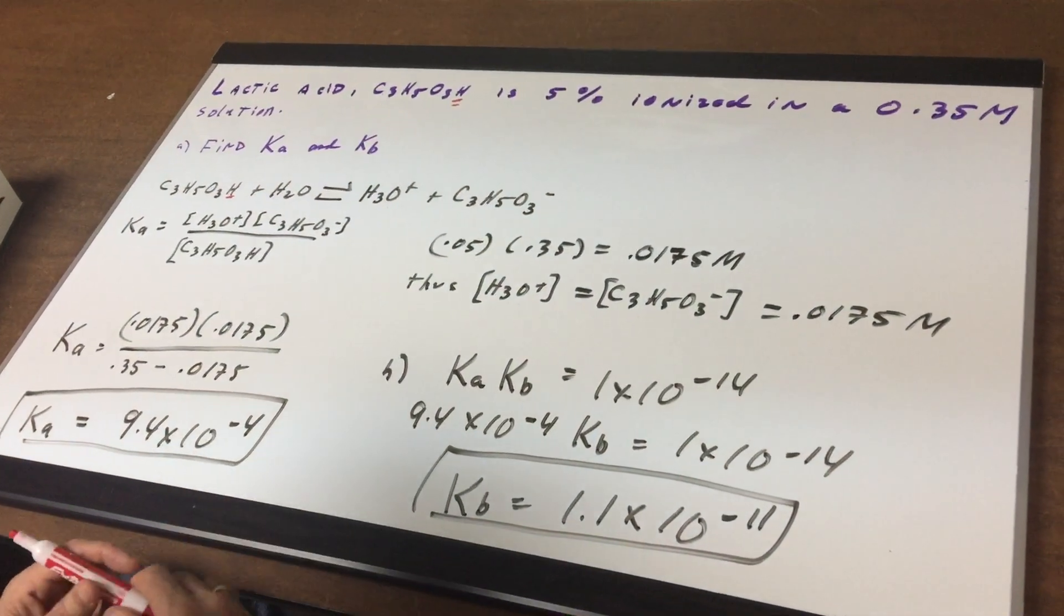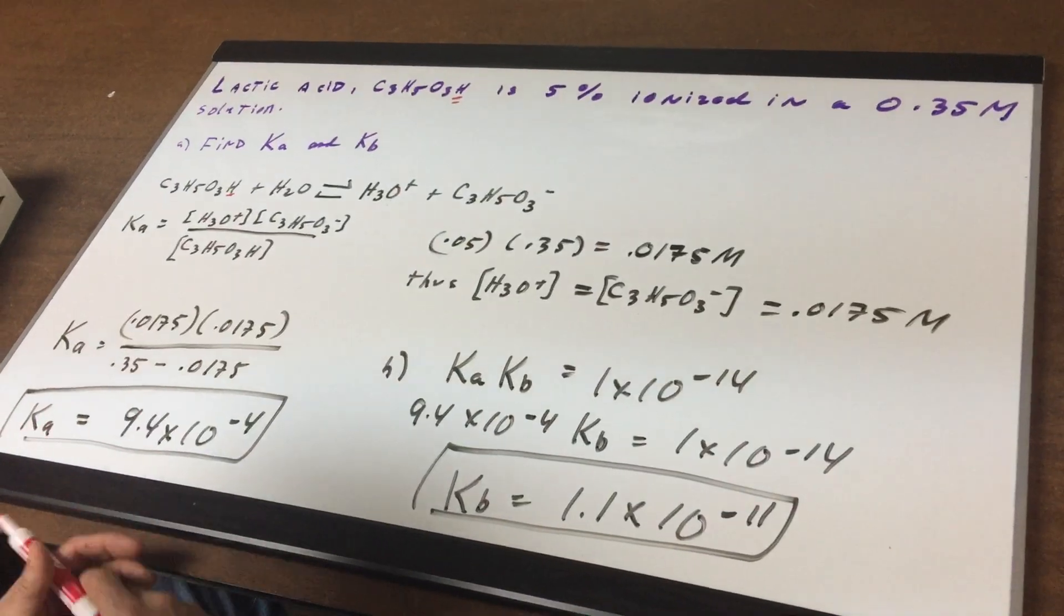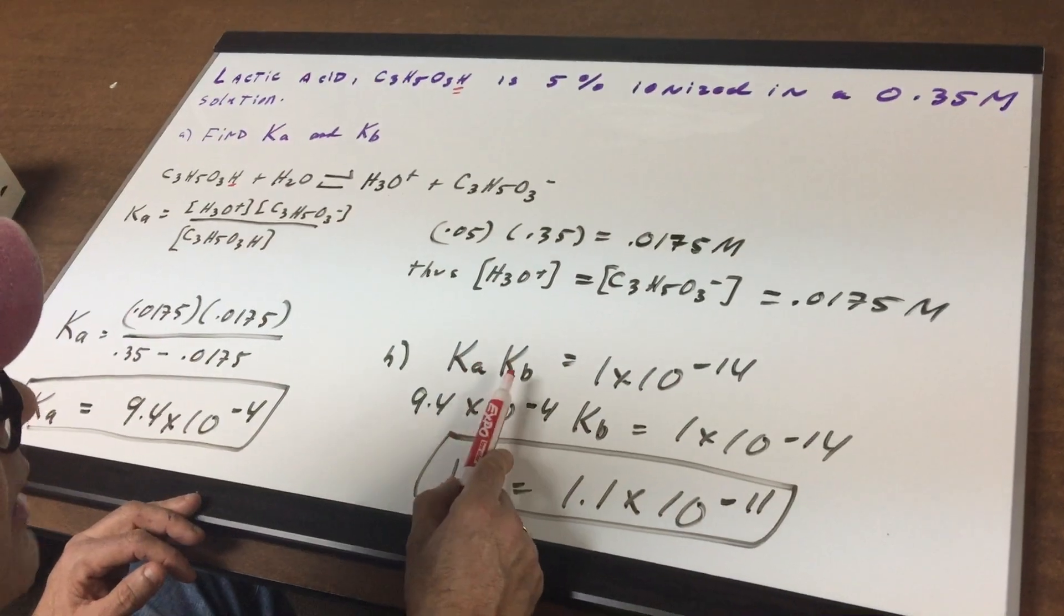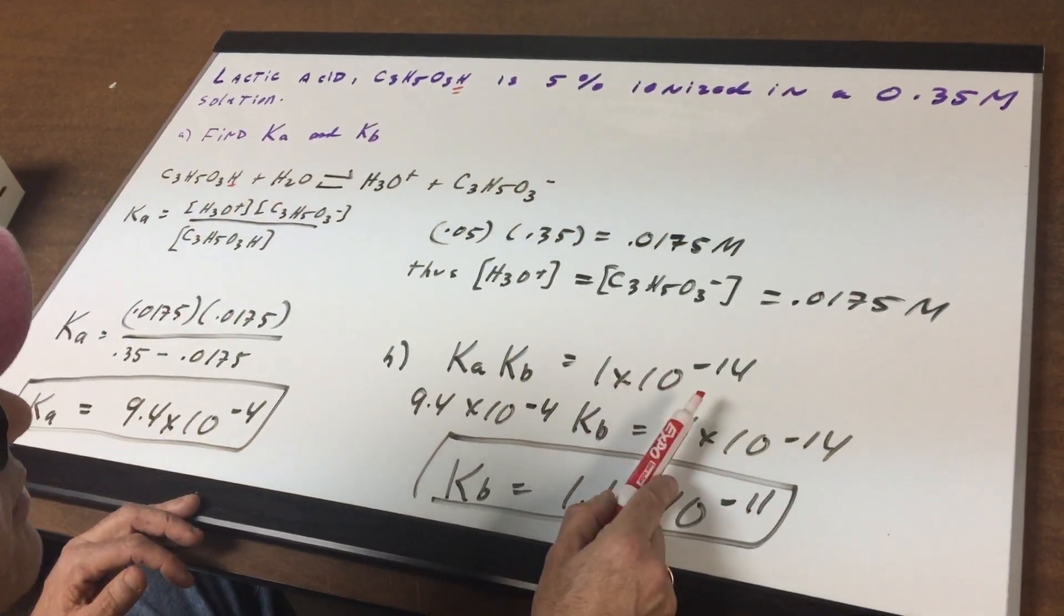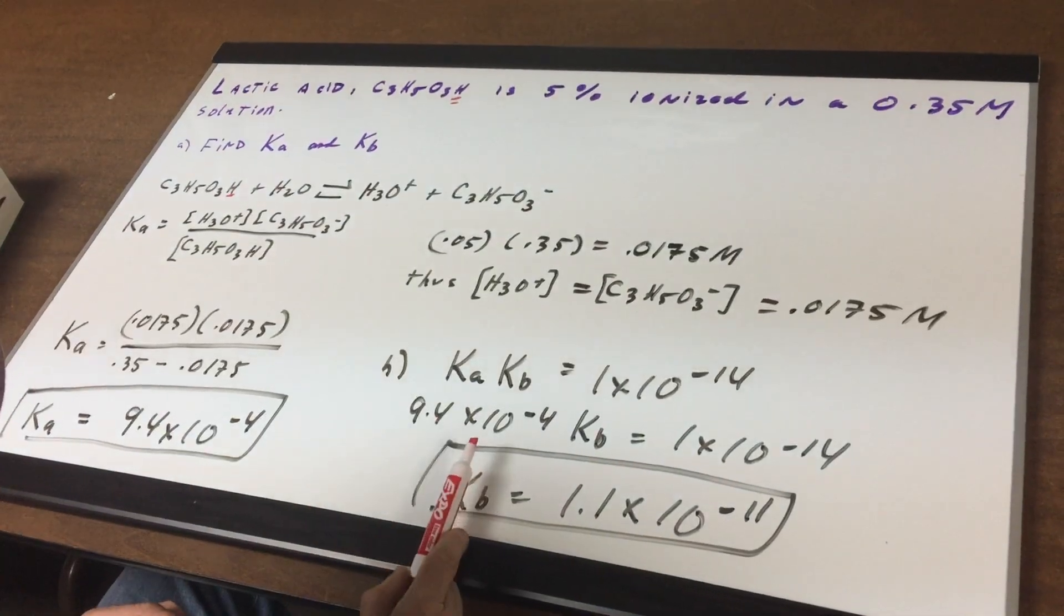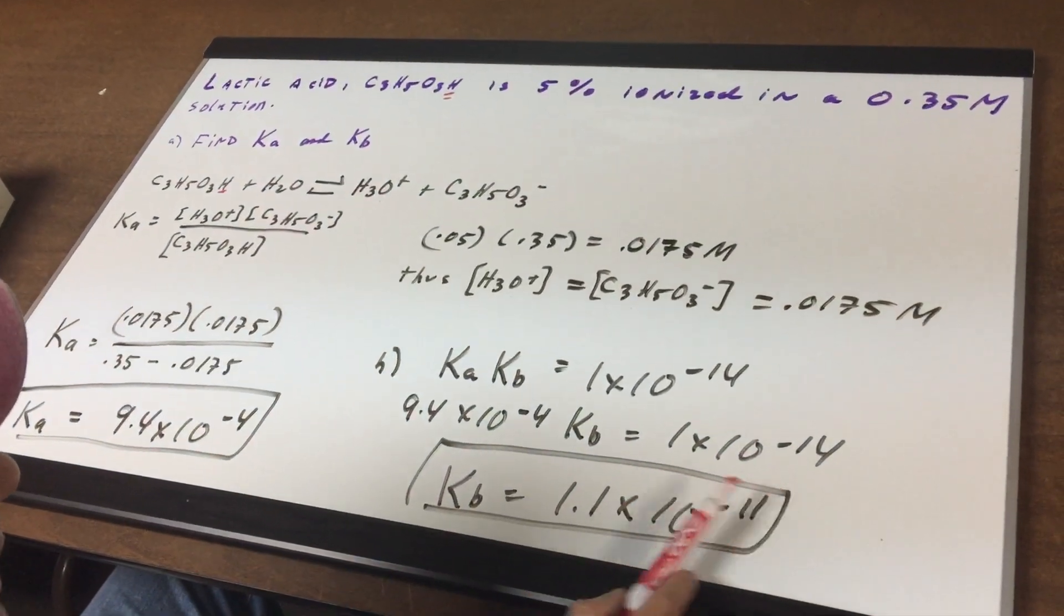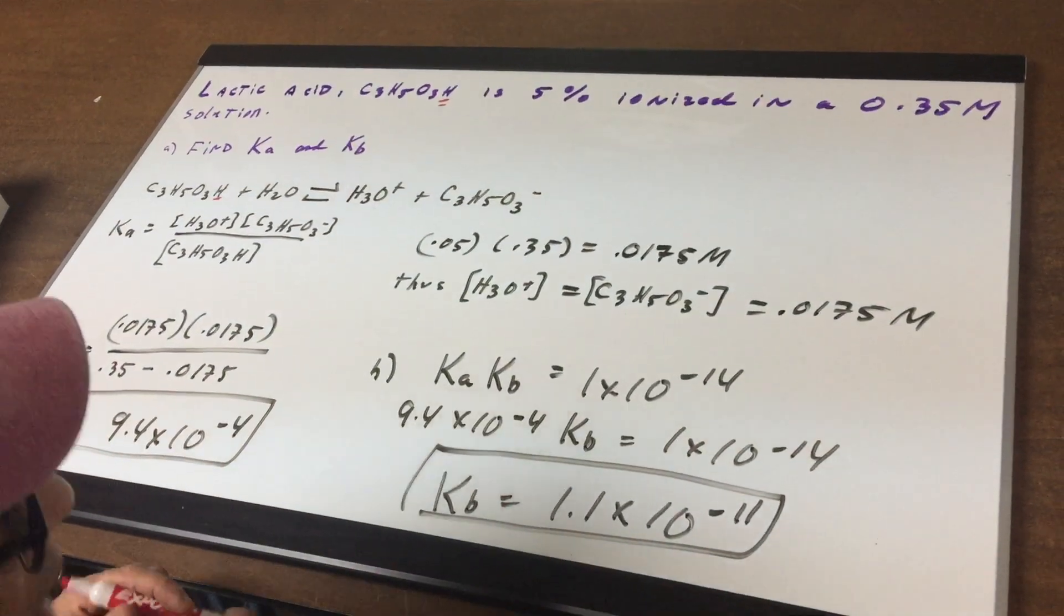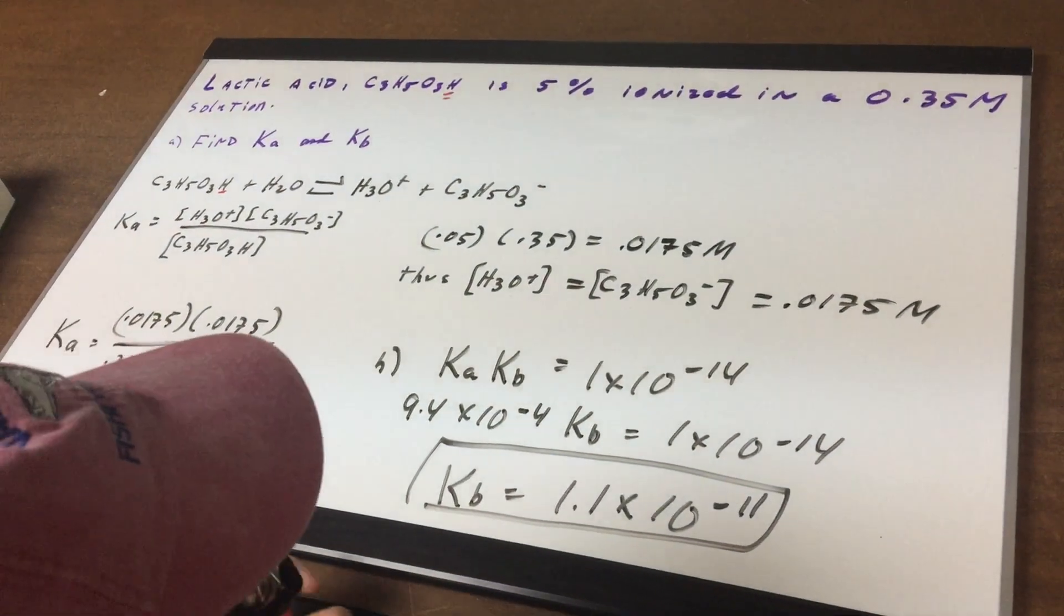So the Ka is 9.4 times 10 to the minus 4th and finally the Ka times the Kb is equal to 1 times 10 to the minus 14th. In order to find the Kb you just plug the numbers in so it's 1 times 10 to the minus 14th divided by the Ka of 9.4 times 10 to the minus 4th and we get 1.1 times 10 to the minus 11th.